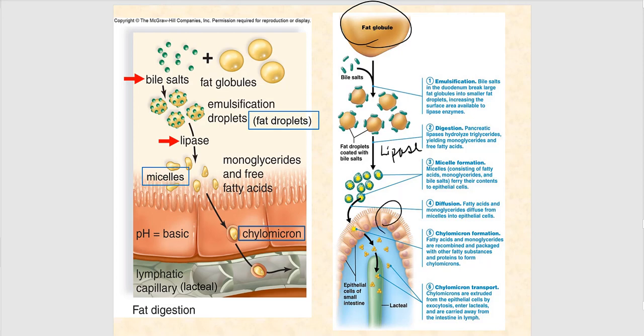Micelles will diffuse into the brush border cells. Once in the cytoplasm intracellularly, they are converted to chylomicrons, which are exocytosed at the basal surface and end up in a lymphatic capillary called a lacteal. Unlike monosaccharides and amino acids, which end up in a blood capillary, fats in the form of chylomicrons end up in a lymphatic capillary — the lacteal. Remember this because we'll pick it up when we get to the liver.